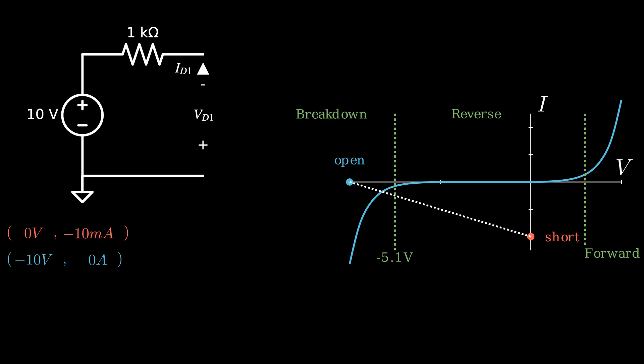This line extends to the left past the breakdown voltage, but that doesn't mean that the intersection with the diode VI plot is any less valid of a solution. The operating point correctly lies within the reverse breakdown region.